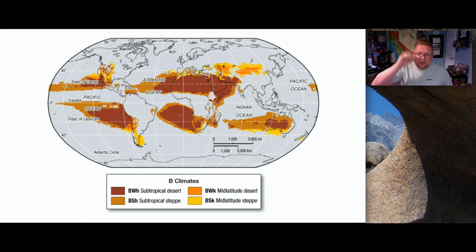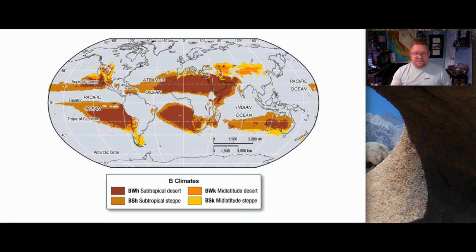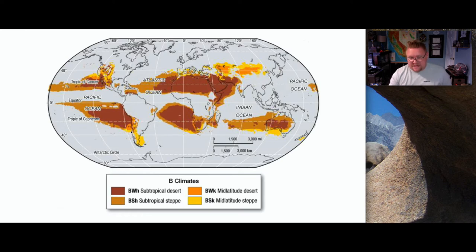Mid-latitude deserts are cold and hot deserts, and mid-latitude steppe is cold and hot semi-arid — not as intense, but still very dry. Deserts are always dry — they're not always hot. They can be very cold, but the key is that they're always dry. Looking at the map for letter B, we're beyond the majority of the equatorial zone and see a distinct correlation right along the tropics themselves. There are also correlations with mountain ranges, since some of the tallest mountains in the world are nearby.